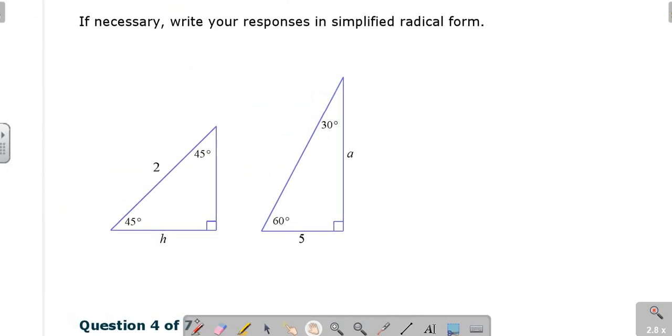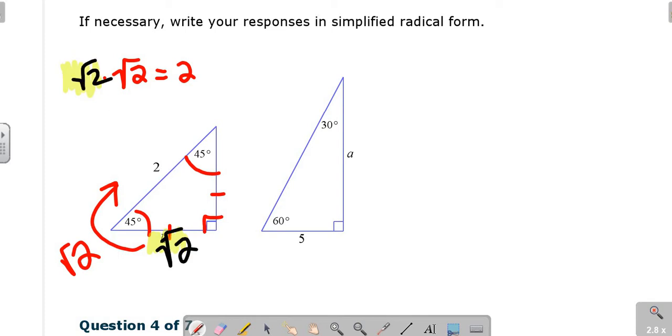Another one. 45-45-90. Leg, leg, leg root 2. This one reads, something times root 2 is 2. What's our something? Our something here is simply root 2, because root 2 times root 2 is 2. Ta-da, you're done.